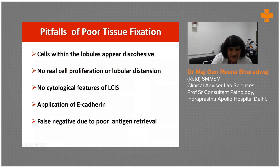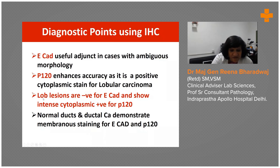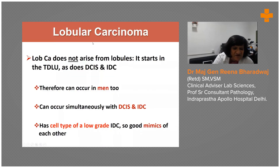Sometimes you may not see distension or find the features of LCIS. Even when you apply e-cadherin, it may not work in referred cases with poor antigen retrieval. Whenever you're in trouble, please use e-cadherin as an adjunct. P120 is not easily available but is documented as a positive cytoplasmic stain for lobular carcinomas — lobular lesions are negative for e-cadherin but positive for cytoplasmic P120, which can often serve as a control in normal ducts. So we've finished with LCIS and all its mimics.